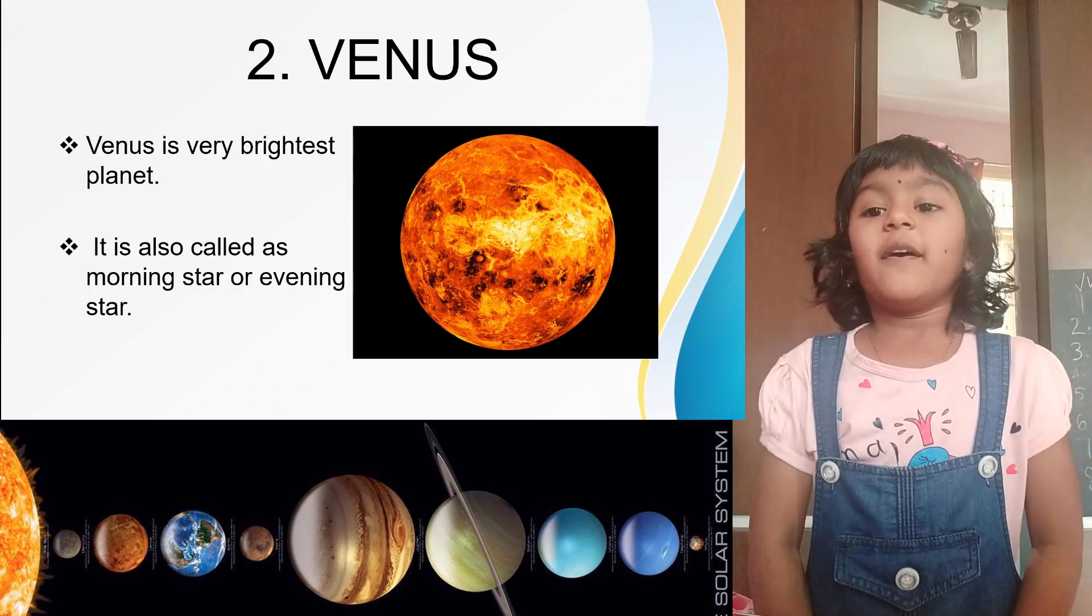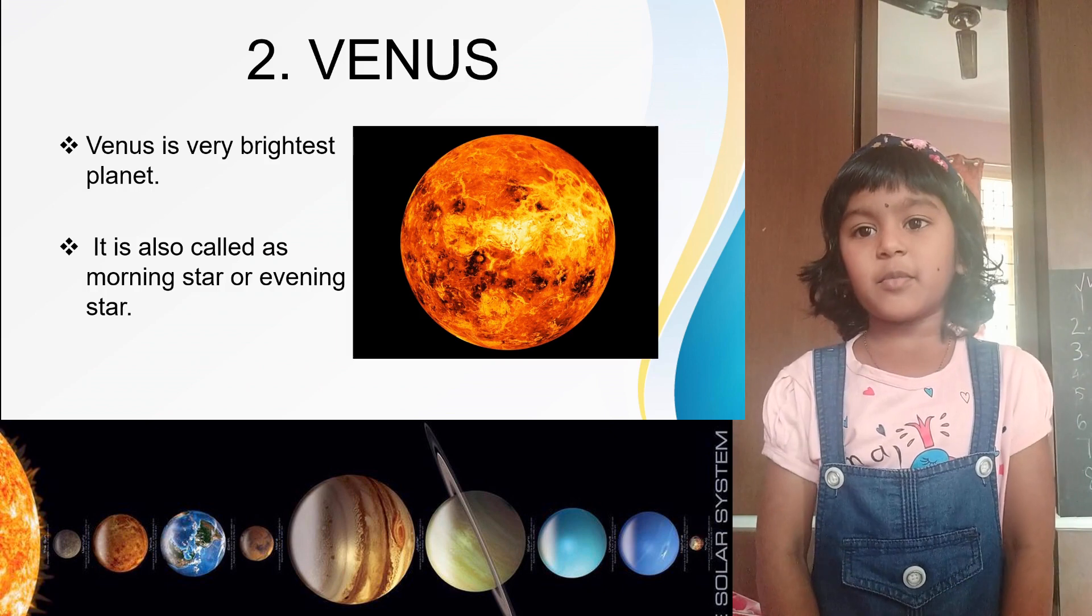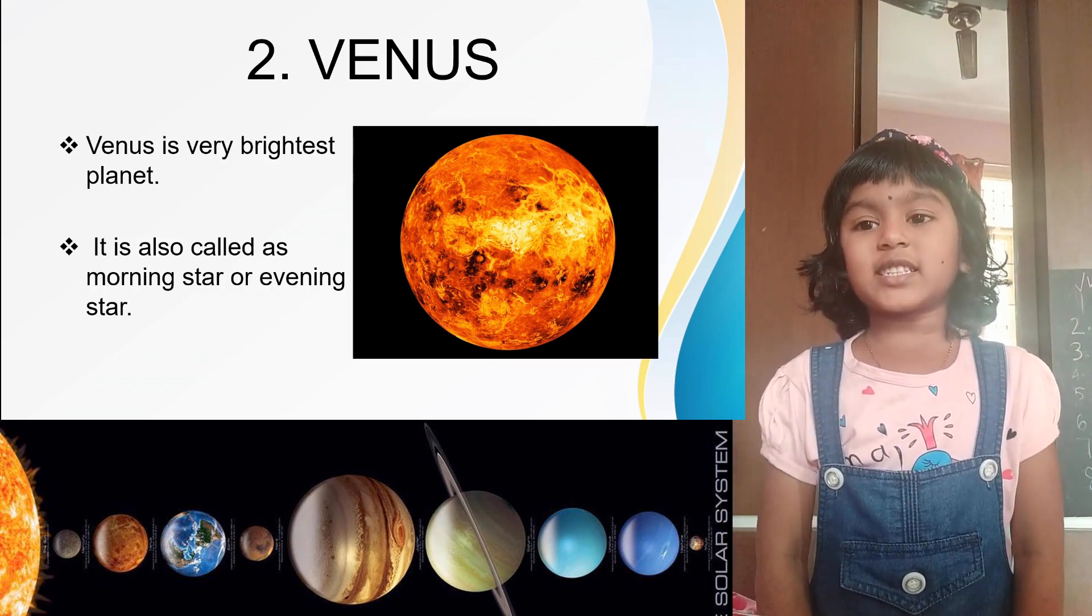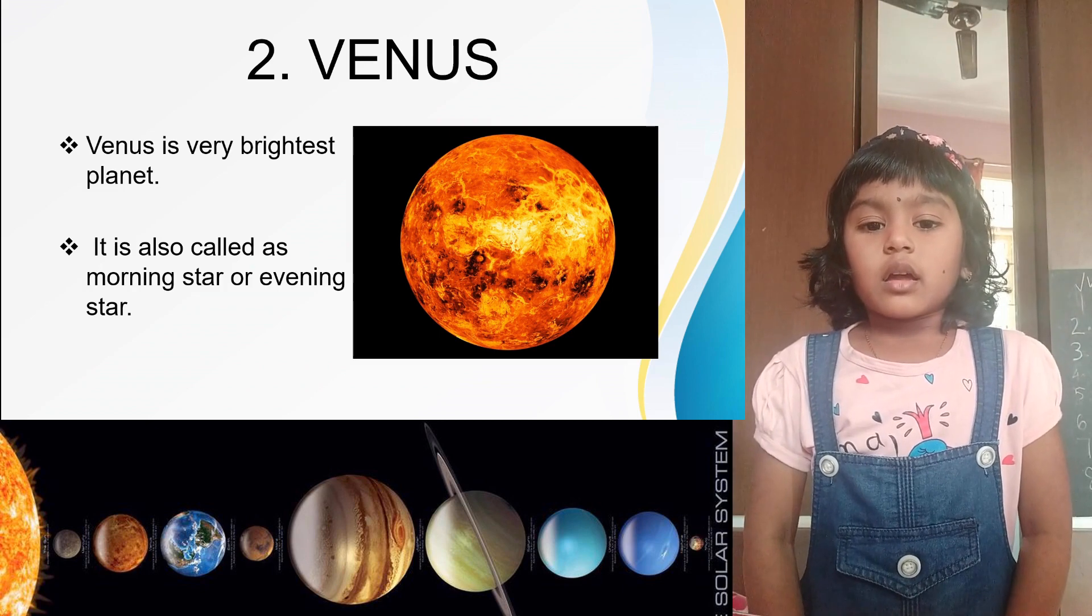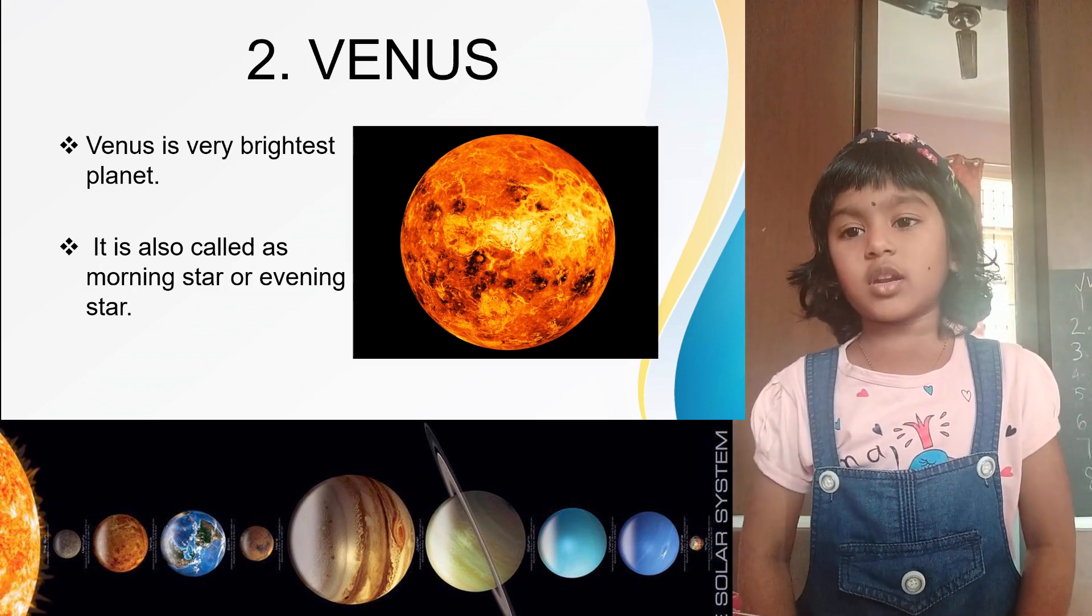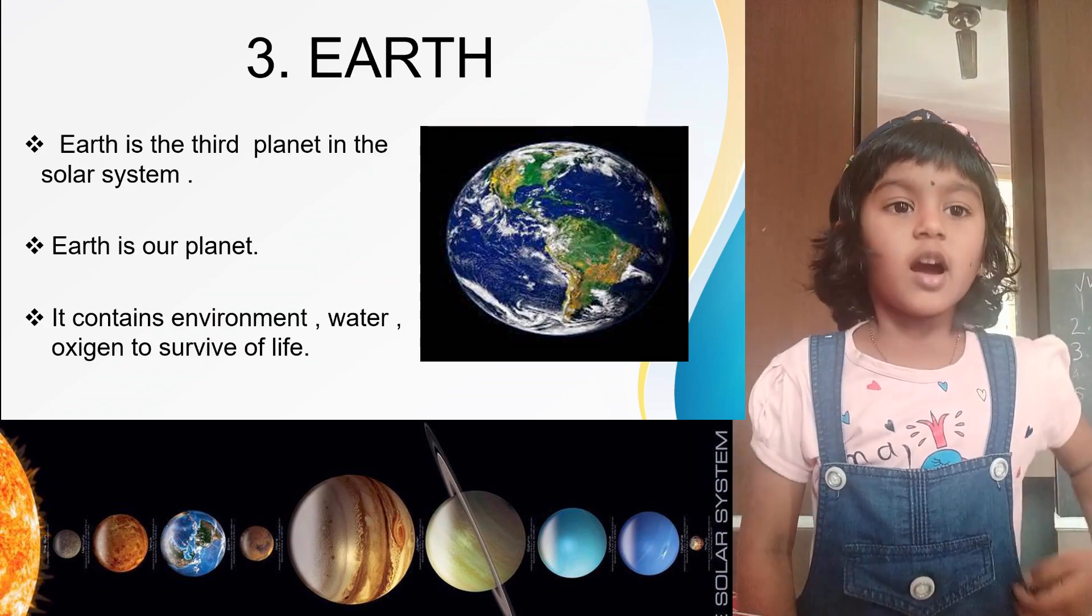Venus. Venus is the second planet of the solar system. It is the brightest planet. It is also called as morning star or evening star.